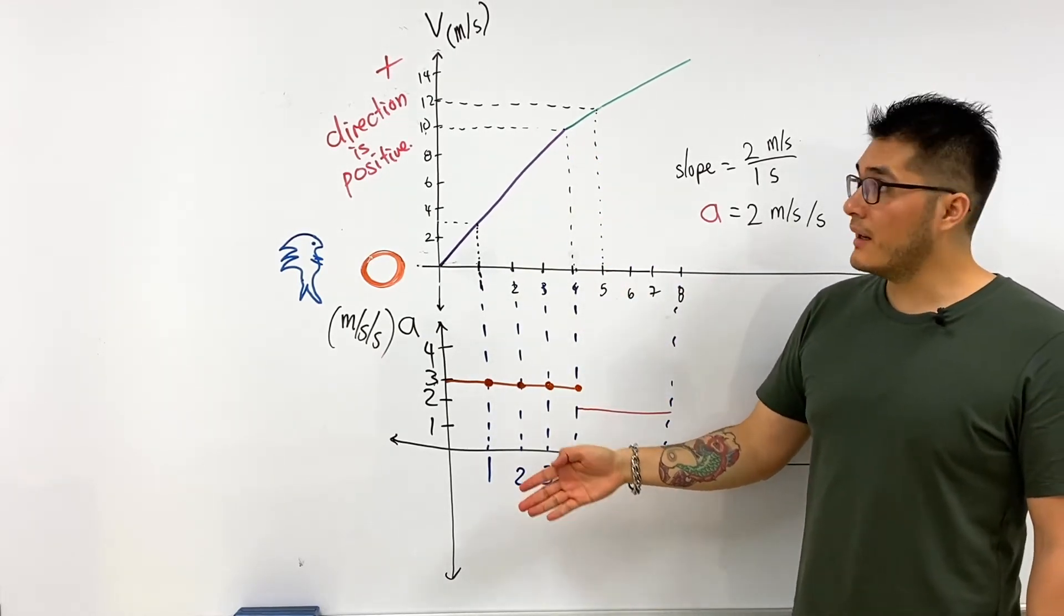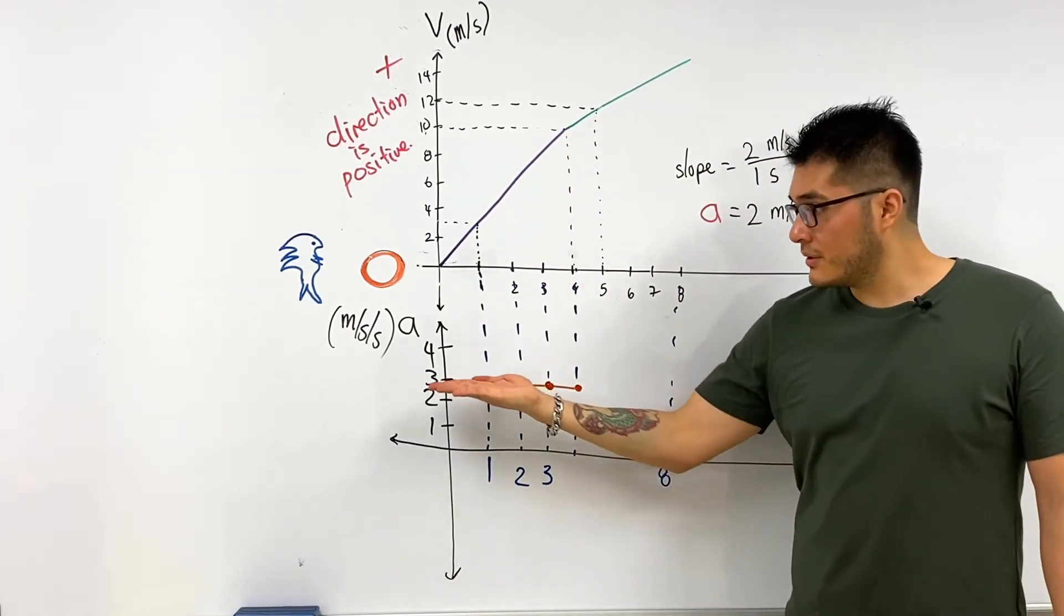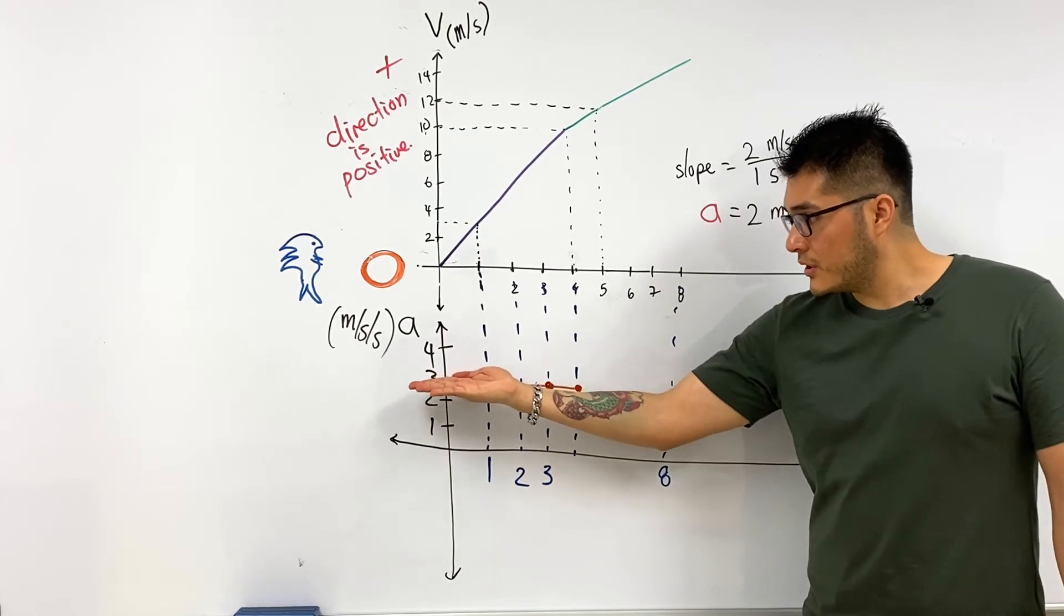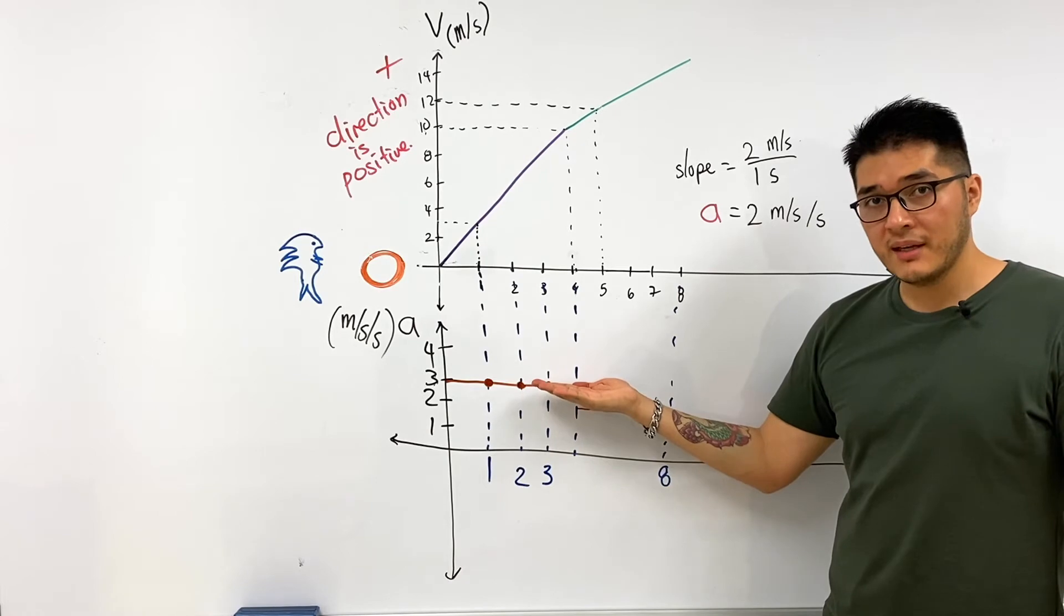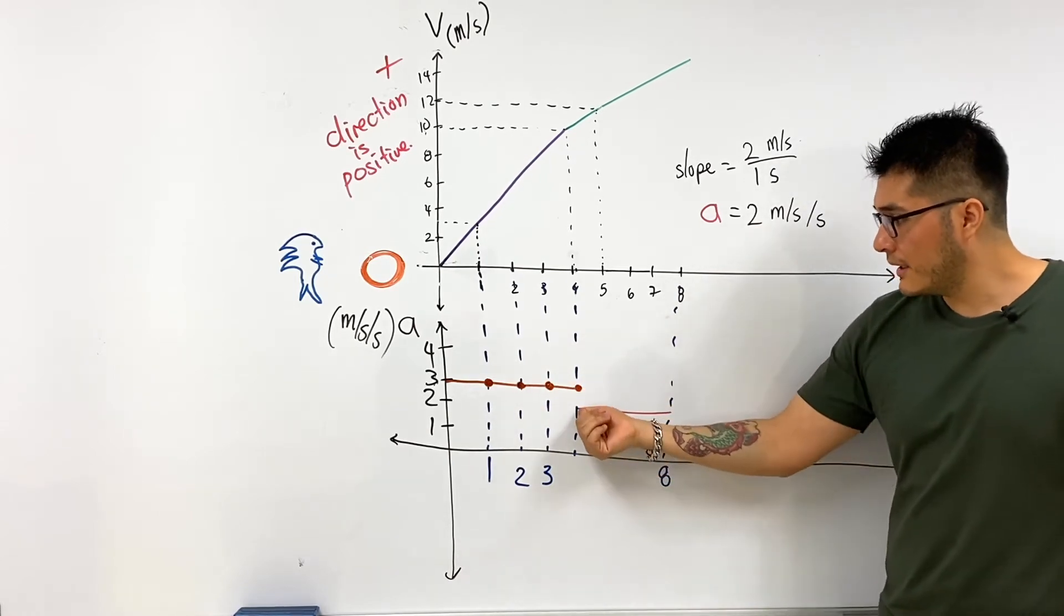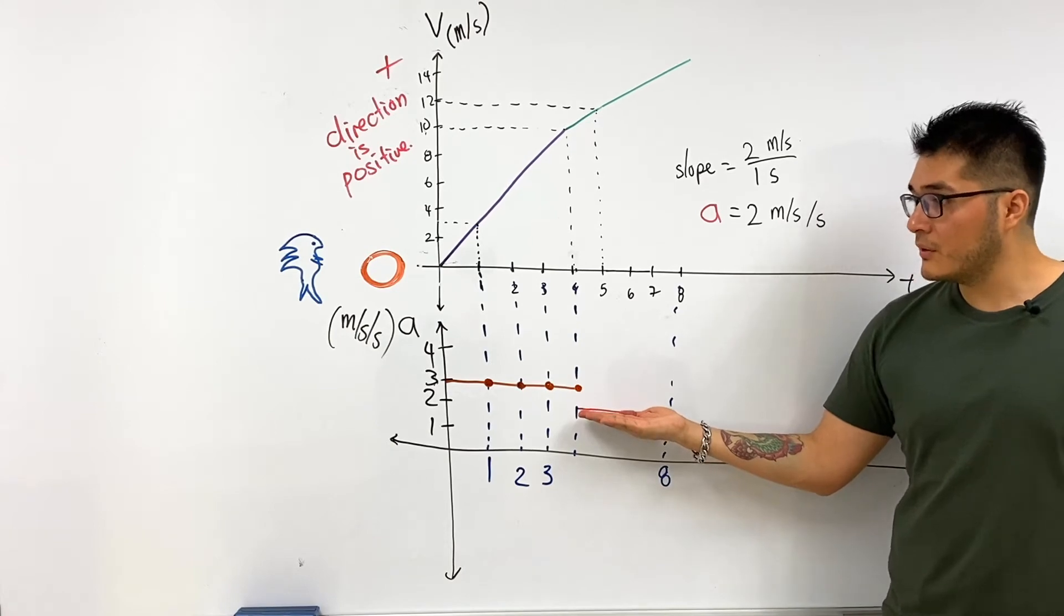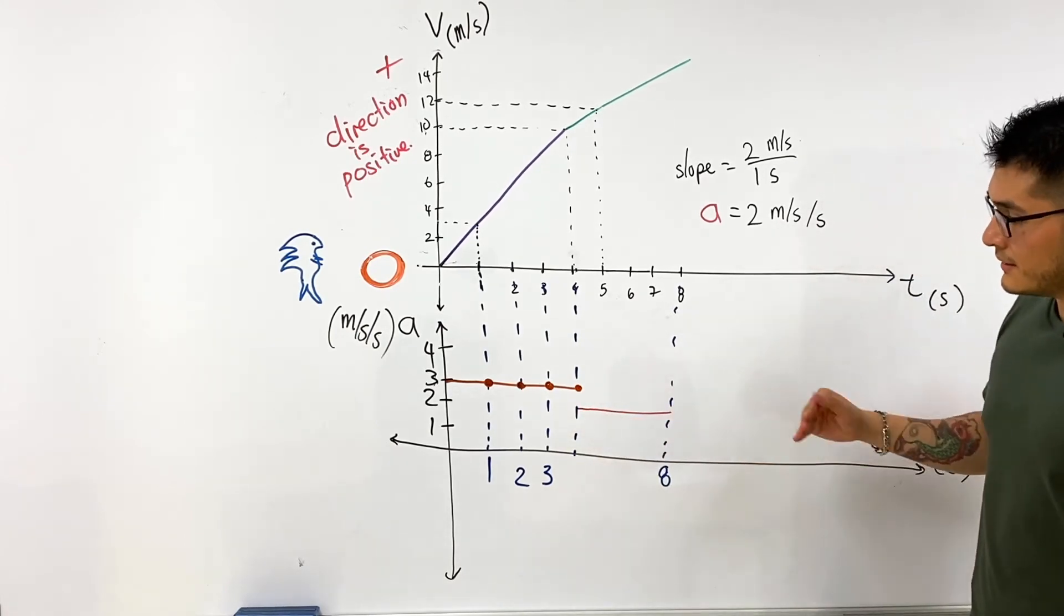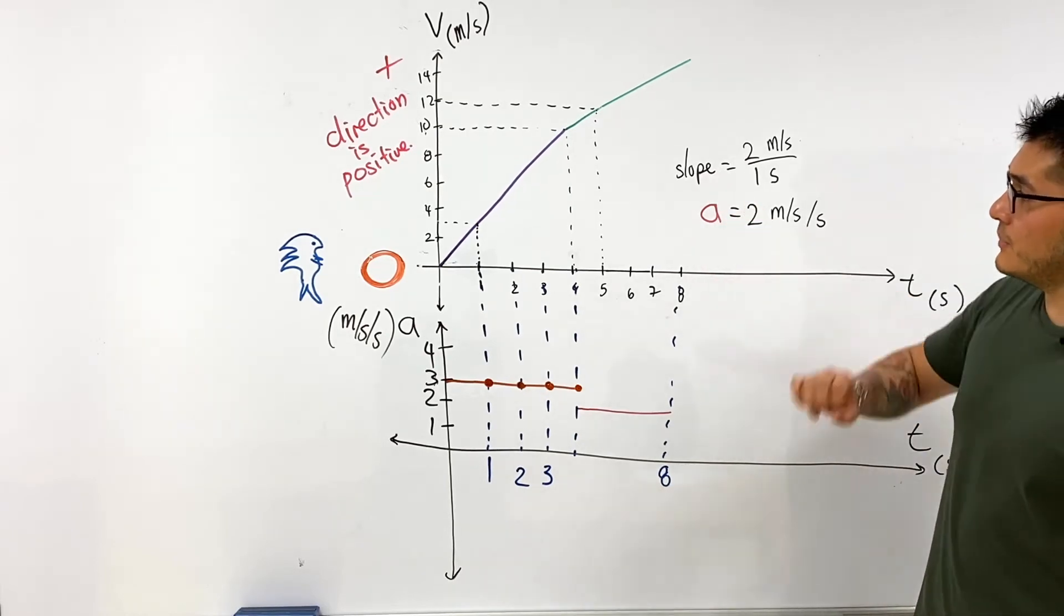And because these were linear graphs, the slope is not going to change. Which is why during the first four seconds, it was constant acceleration at three meters per second per second. And this is an easy way to draw acceleration versus time graph by looking at this motion.